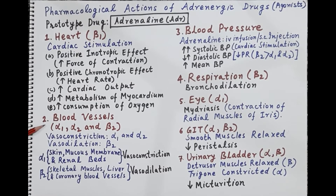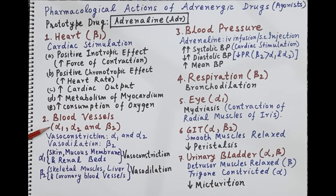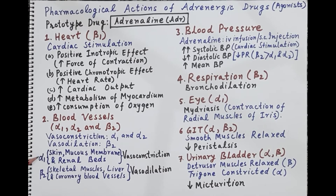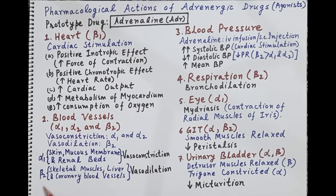The effect of adrenaline on blood vessels: alpha 1, alpha 2, and beta 2 receptors are present on blood vessels. Stimulation of alpha 1 and alpha 2 receptors produces vasoconstriction, whereas stimulation of beta 2 receptors produces vasodilation. Alpha 1 receptors are present on blood vessels of skin, mucous membranes, and renal beds, so adrenaline binding there causes vasoconstriction. Beta 2 receptors are present on blood vessels of skeletal muscles, liver, and coronary blood vessels, and their stimulation results in vasodilation.